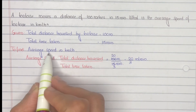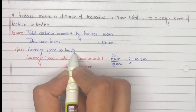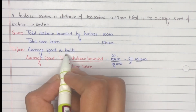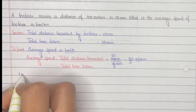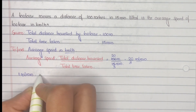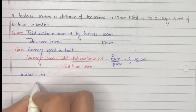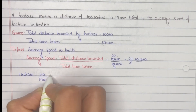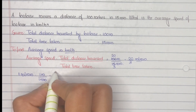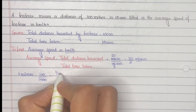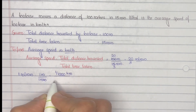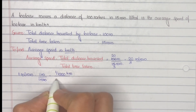The question asks for average speed in kilometers per hour, so our aim is to convert meter per minute to kilometer per hour. 1 meter per minute means 1 meter per 1 minute. Convert meter to kilometer: 1 meter is 1/1000 kilometer. And convert minute to hour: 1 minute is 1/60 hour.